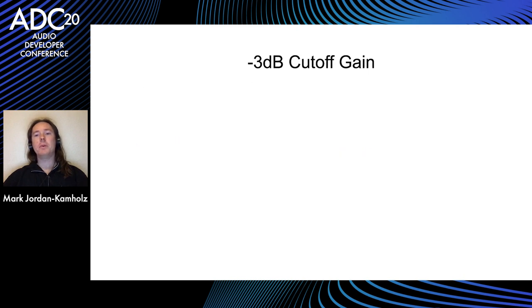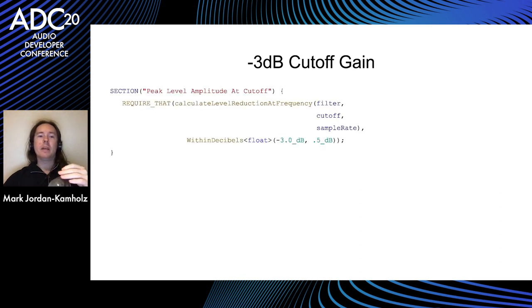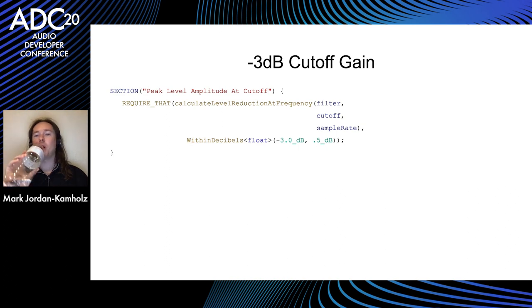The next thing we want to check is that the signal is actually attenuated by 3 dB at the cutoff frequency. We calculate the level reduction of a signal at a certain frequency. This generates a sine wave at the cutoff frequency and runs it through the filter we give. If we measure the peak amplitude of both signals, and the difference between the dB values is within half a dB of negative 3 dB, then we consider the test as passing.